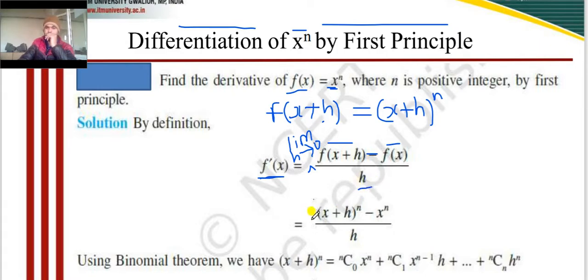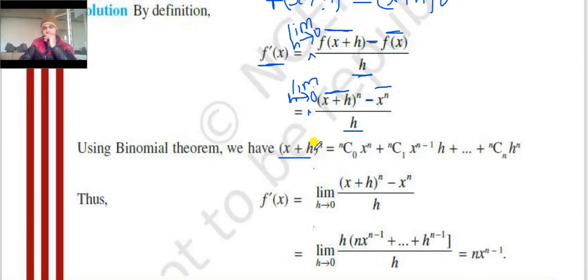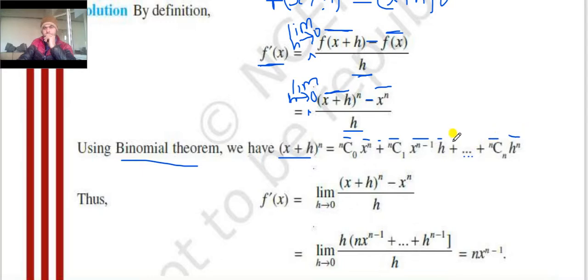This is the formula of differentiation by the first principle. Here we write: limit h tends to 0 of [x plus h to the power n minus x to the power n] divided by h. The expansion of x plus h to the power n by the binomial theorem is: nC0 x to the power n plus nC1 x to the power n minus 1 times h plus dot dot dot plus nCn h to the power n, and so on.